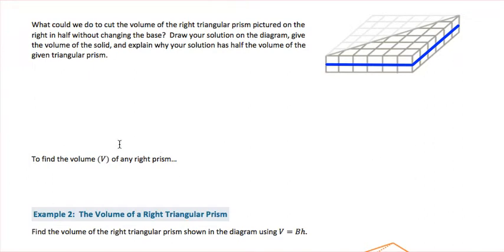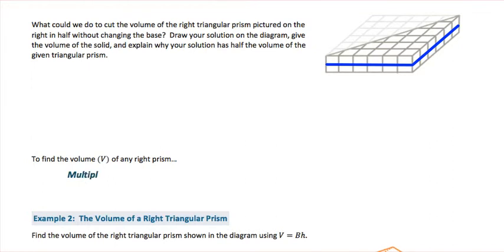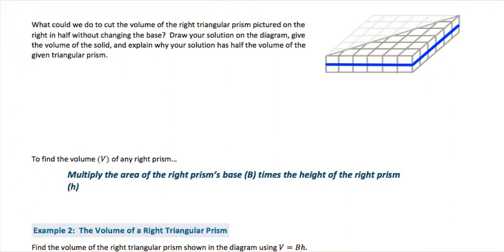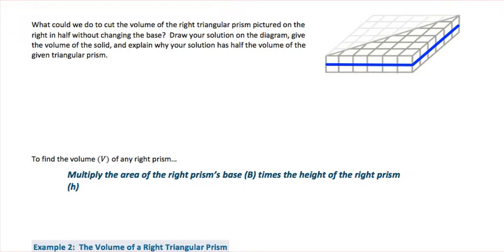To find the volume of any right prism, we multiply the area of the right prism's base — represented as capital B — times the height of the right prism, represented by H. That formula is: Volume (V) equals B, the area of the base, times height.